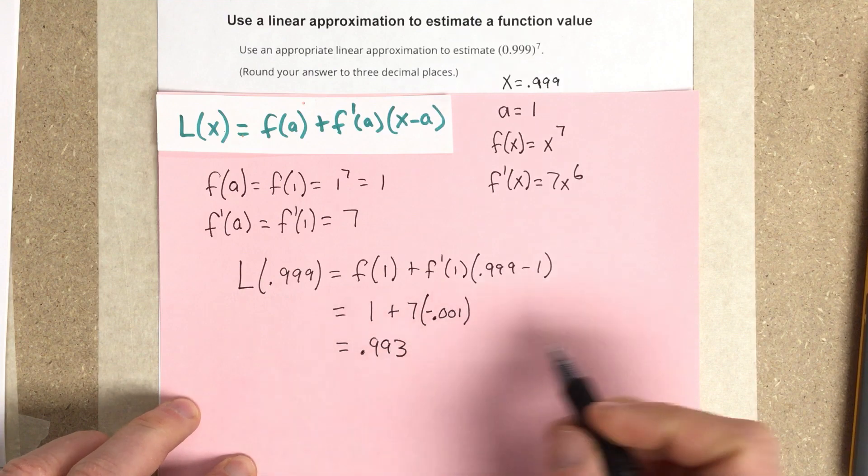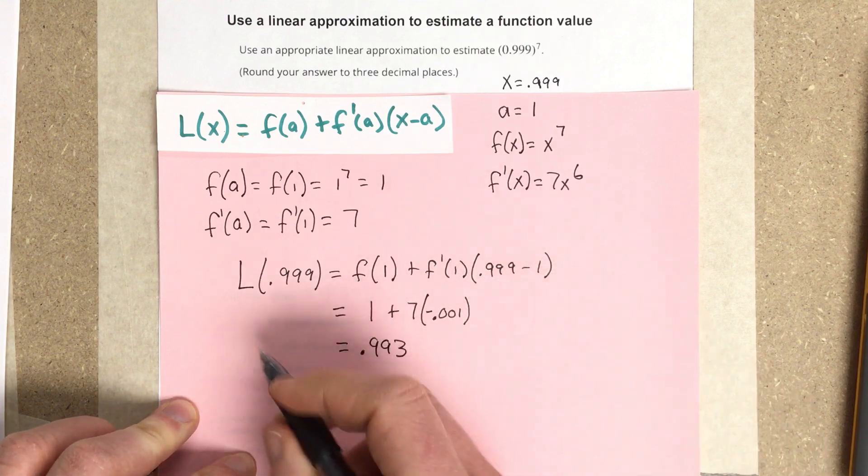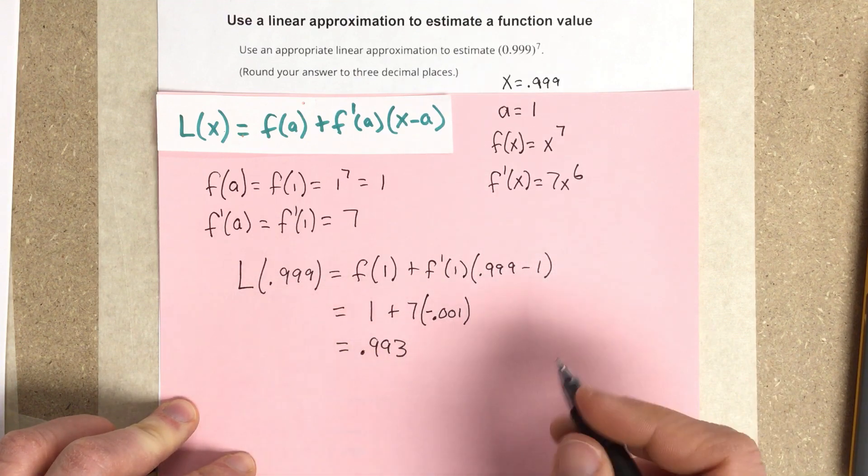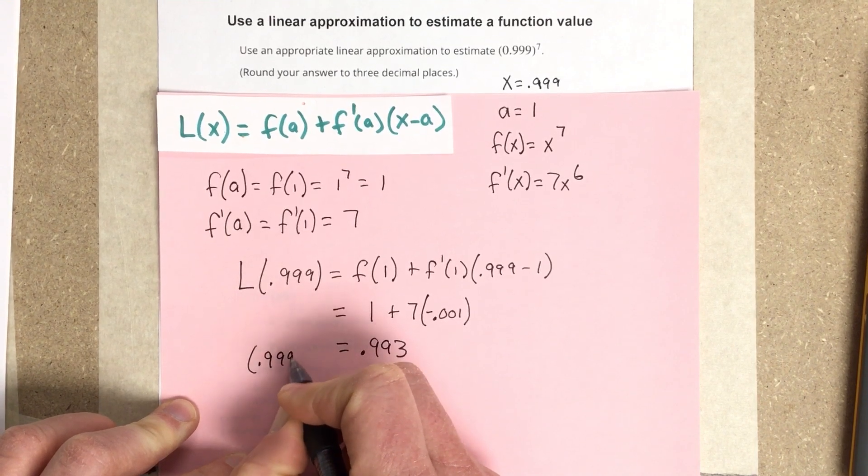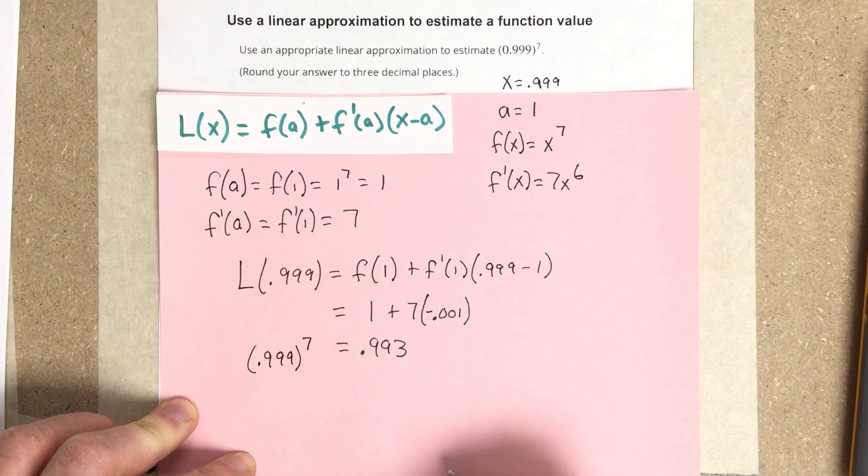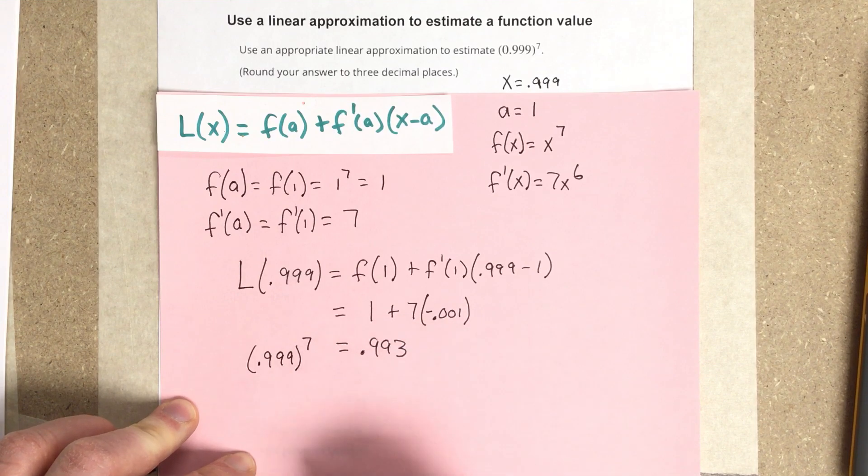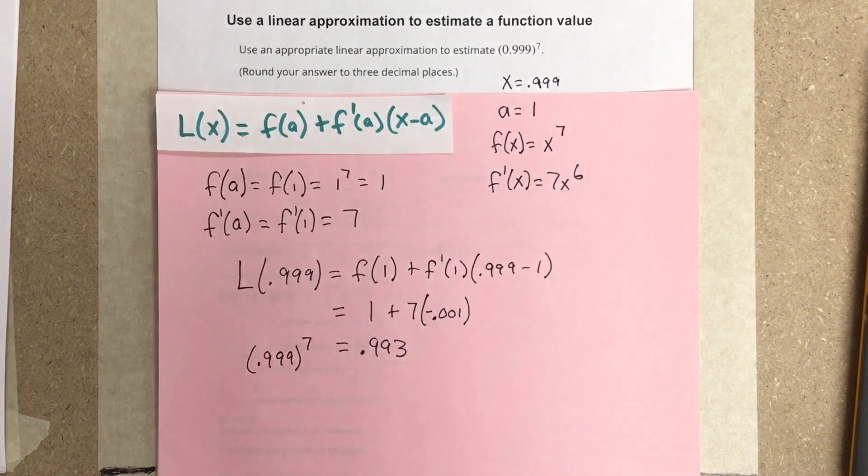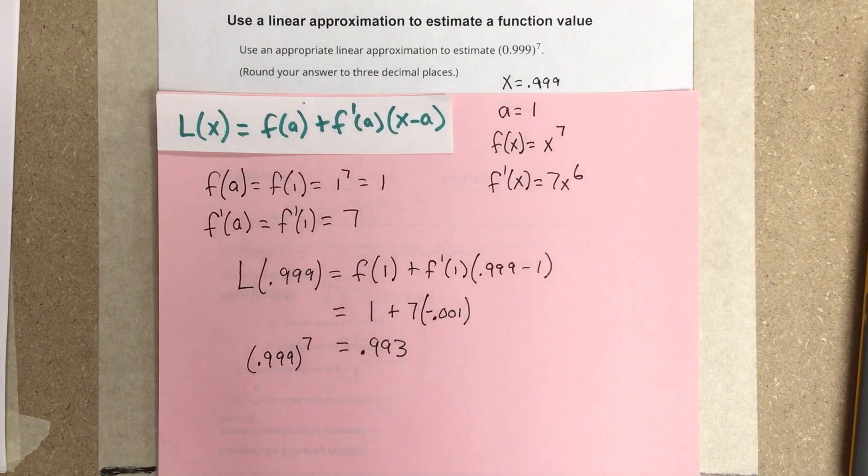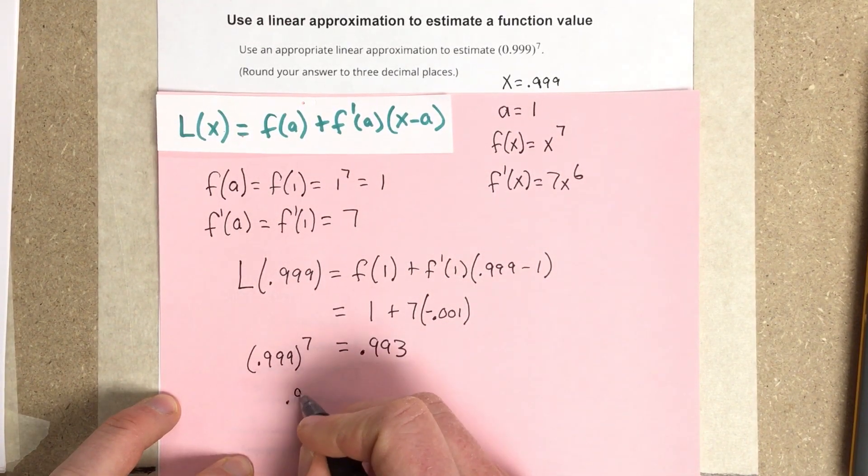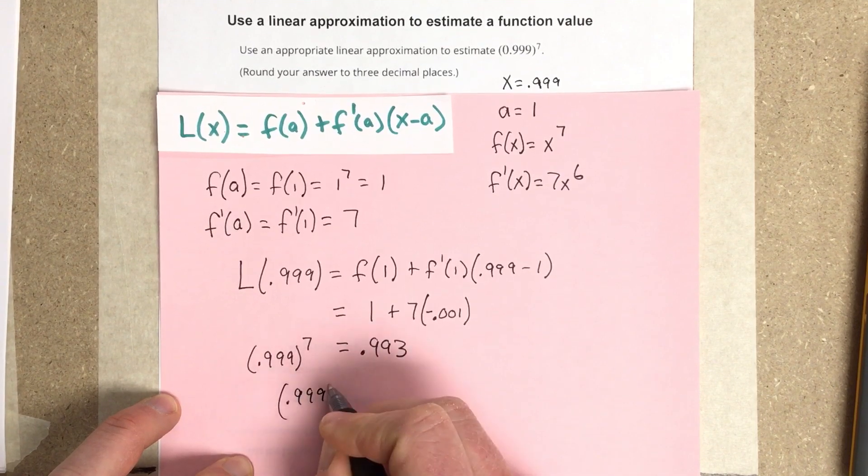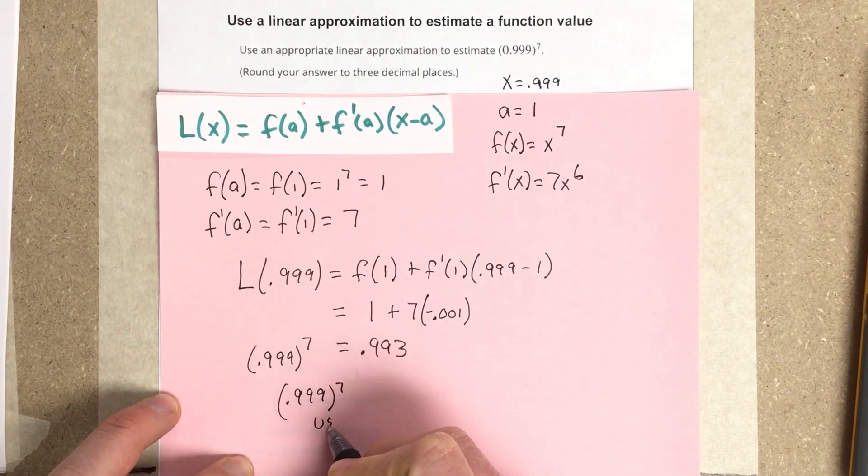So this is saying that our linear approximation for 0.999 to the 7th is equal to 0.993. Now I'm going to actually plug that into the calculator to show that this is pretty close. When I plug this in the calculator, 0.999 to the 7th using calculator...